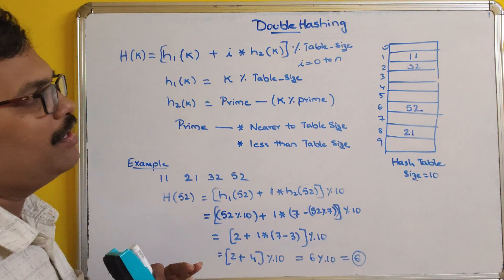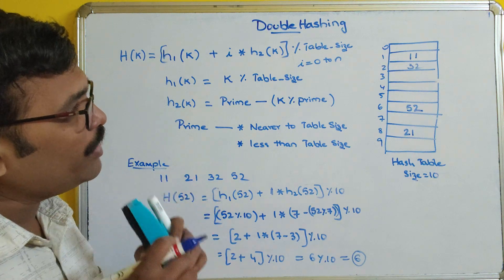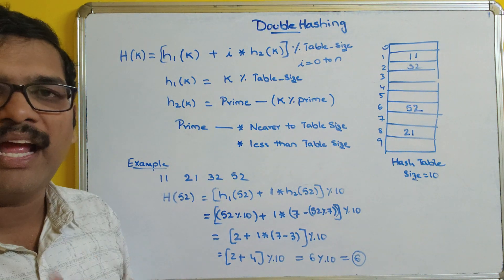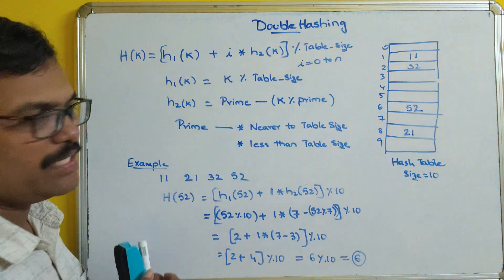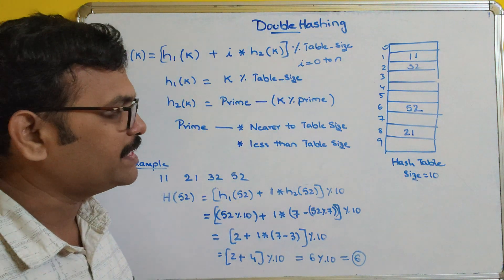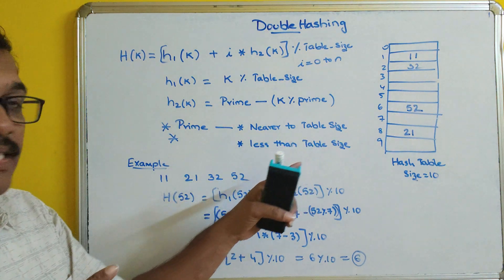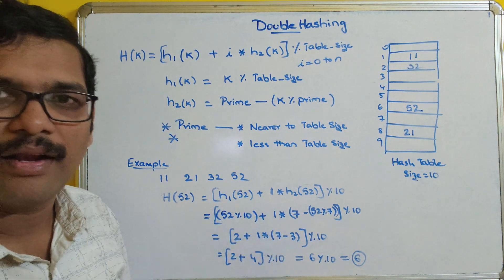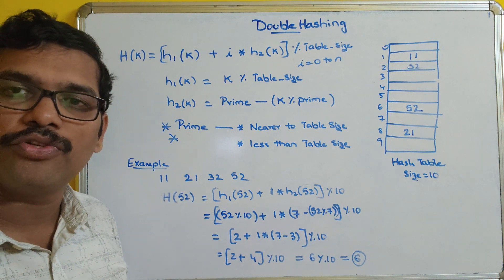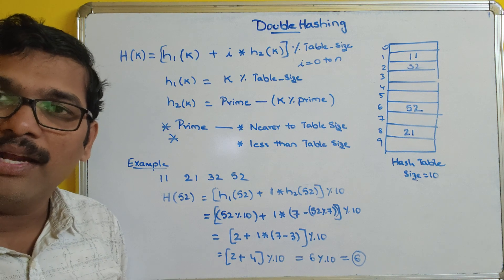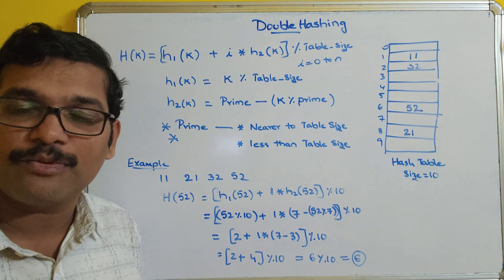This is the simple technique to handle collision using double hashing. As the name indicates, we calculate hash codes two times, add them, and apply the mod operator with the table size. The prime must be nearer to the table size and less than it. Hope you understood. If you have any queries, feel free to post in the comment section. If you enjoyed the session, like, share, and don't forget to subscribe to our channel. Thank you very much.